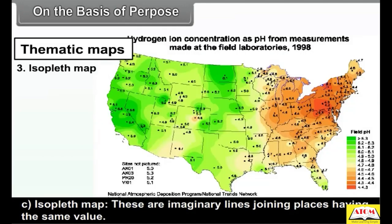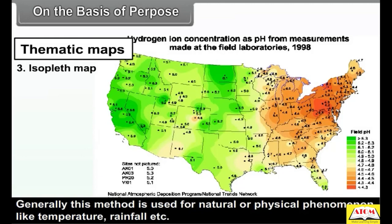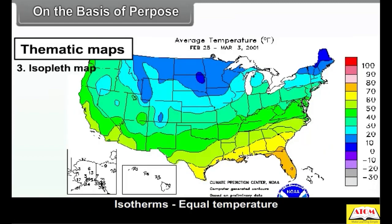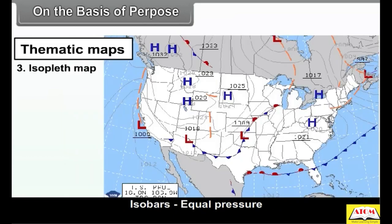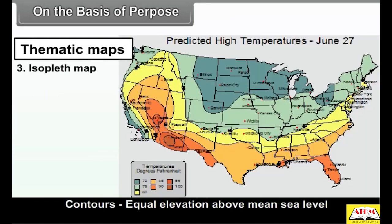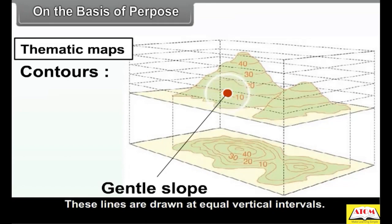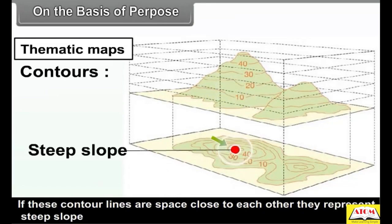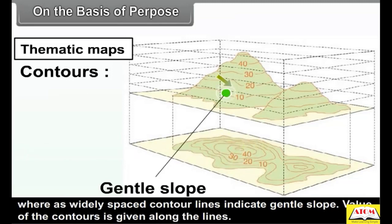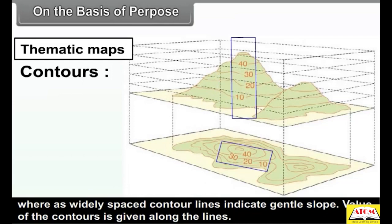Isopleth map: these are imaginary lines joining places having the same value. Generally this method is used for natural or physical phenomena like temperature, rainfall, etc. Types include: isotherms (equal temperature), isobars (equal pressure), isoheights (equal rainfall), and contours (equal elevation above mean sea level). Contours are imaginary lines joining all places of the same height above sea level, drawn at equal vertical intervals. If contour lines are spaced close to each other, they represent a steep slope, whereas widely spaced contour lines indicate a gentle slope. The value of the contours is given along the lines.